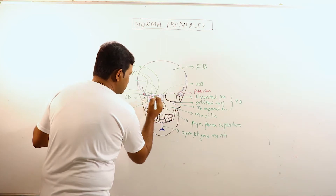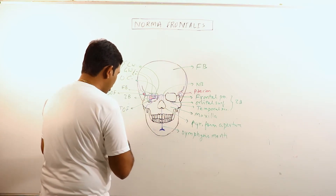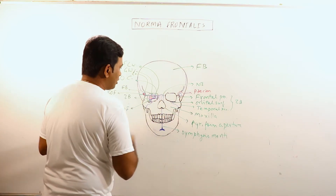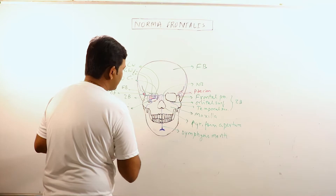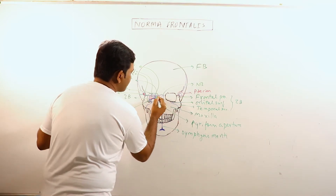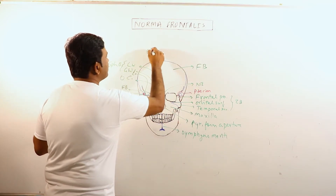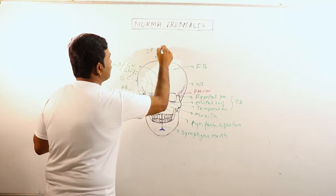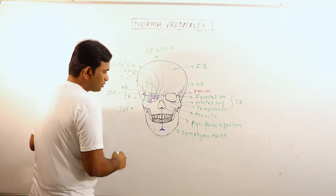And this bone is the orbital plate of ethmoid bone.